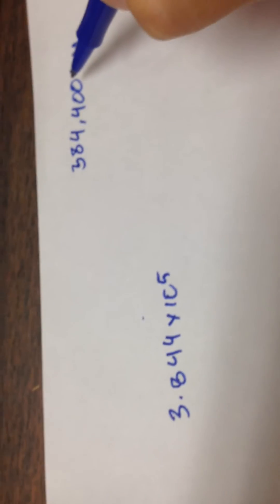Notice that the decimal point moved over one, two, three, four, five times in order to make that large number.